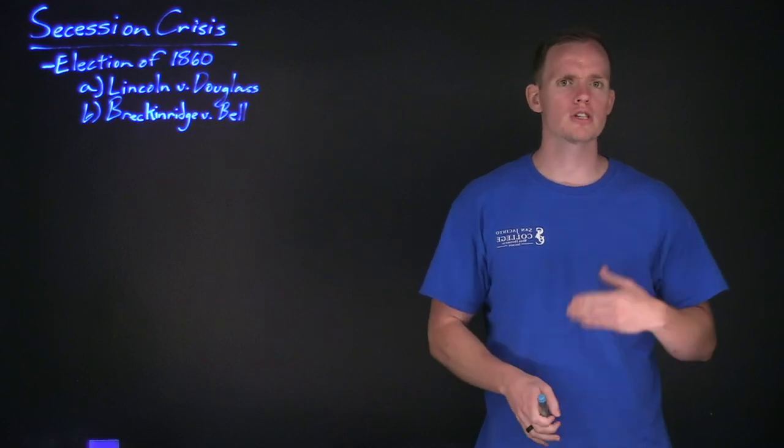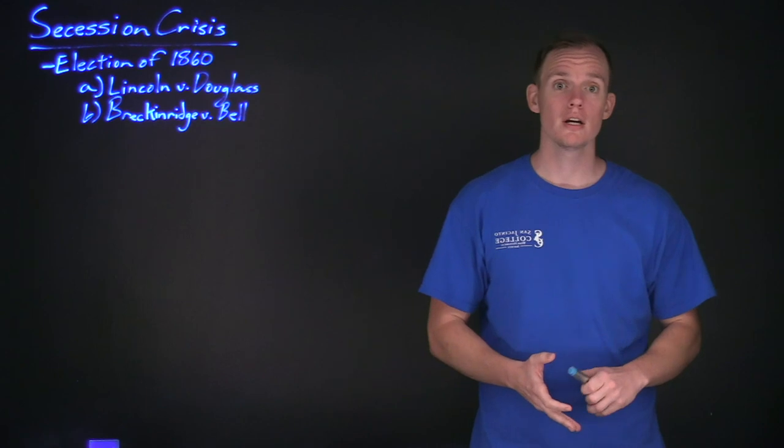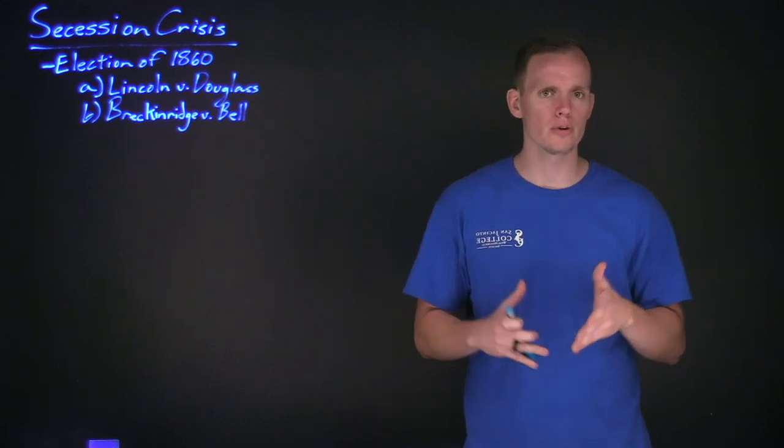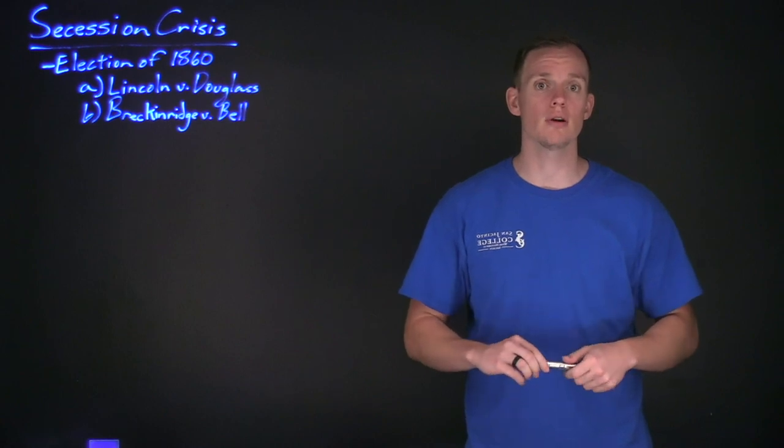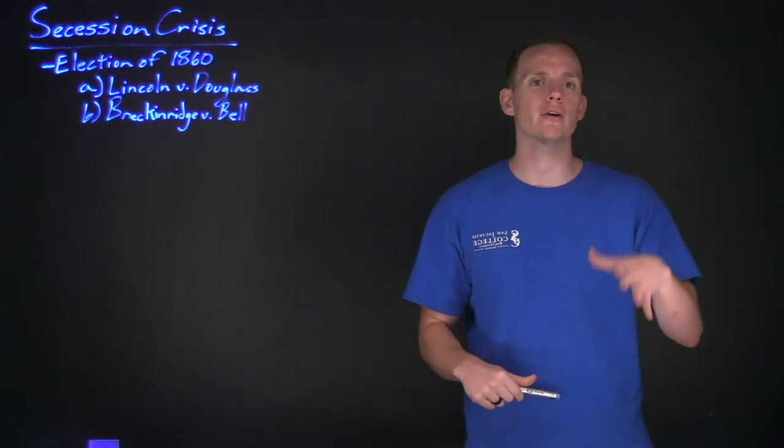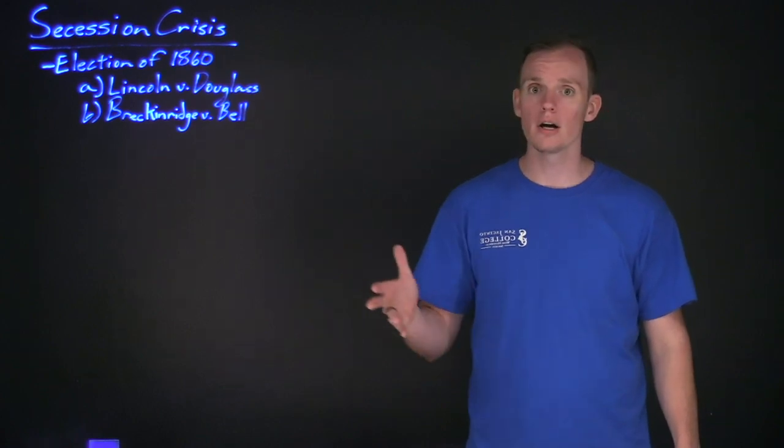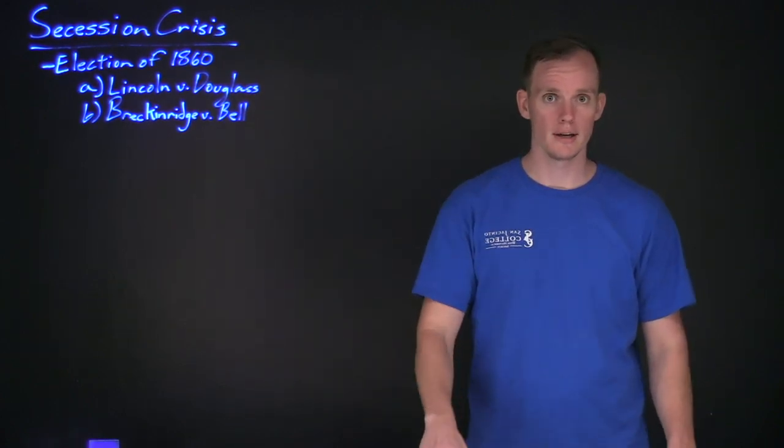When we were last in lecture, we saw that following John Brown's raid, the nation was split like never before. Southerners were suspicious of northerners, believing that their institution of slavery was under threat, and they believed that the outcome of the election of 1860 would determine whether or not the institution would live on or if it would die out.